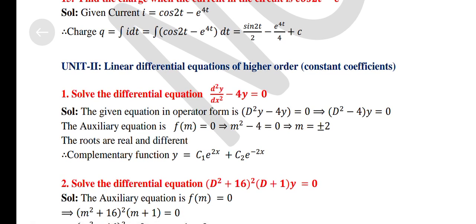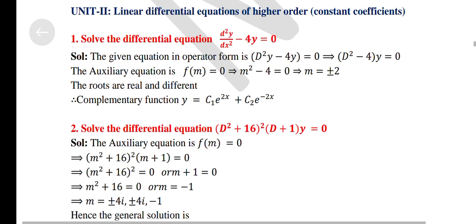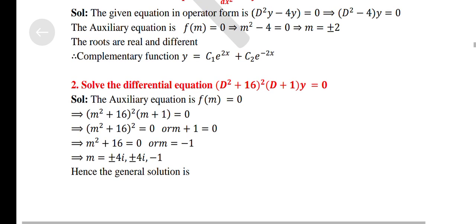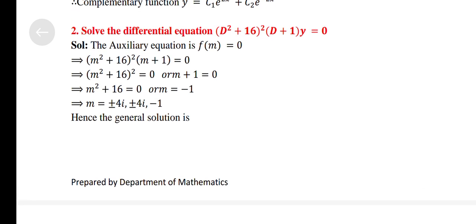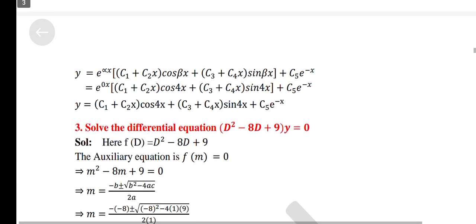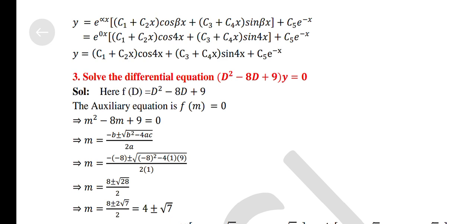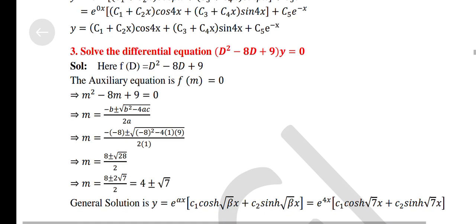Unit 2: Linear differential equations of higher order with constant coefficients. Solve the differential equation: d²y/dx² − 4y = 0. Solve: (D² + 16)² D + 1) y = 0. Solve: (D² − 8D + 9) y = 0.